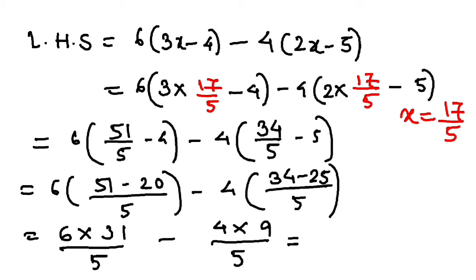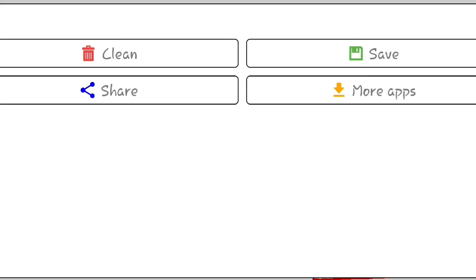This will give me 186 by 5 minus 36 by 5. So I have 186 by 5 minus 36 by 5.